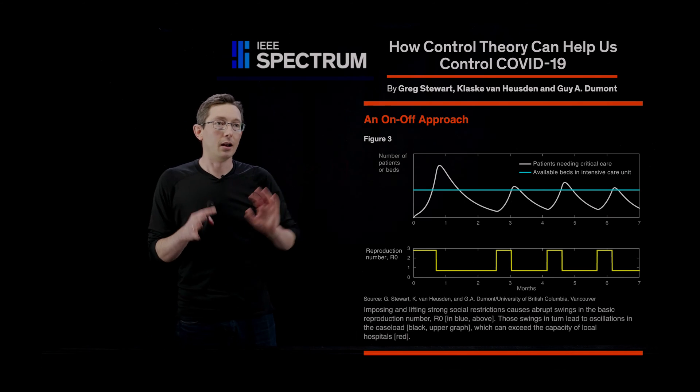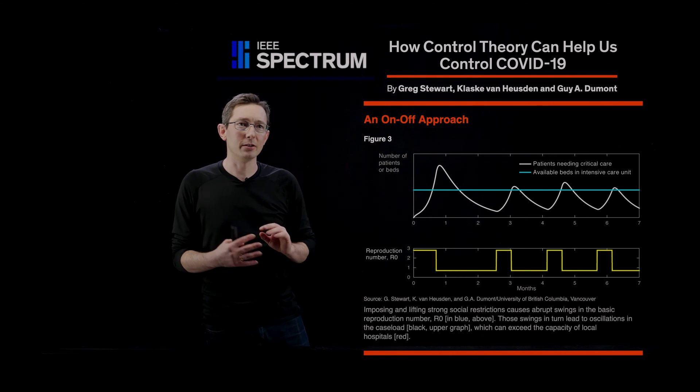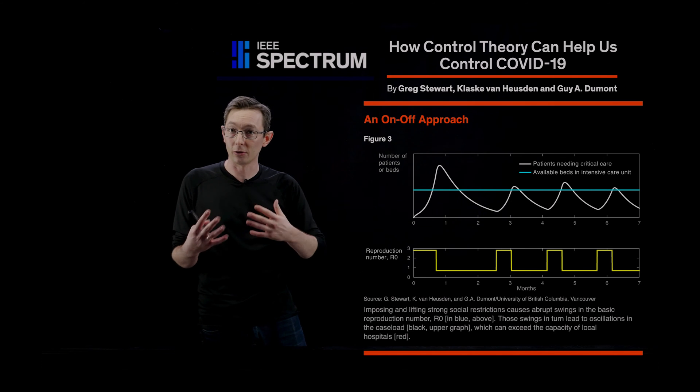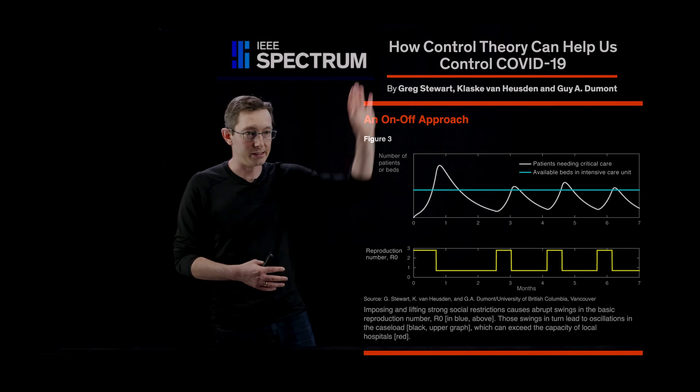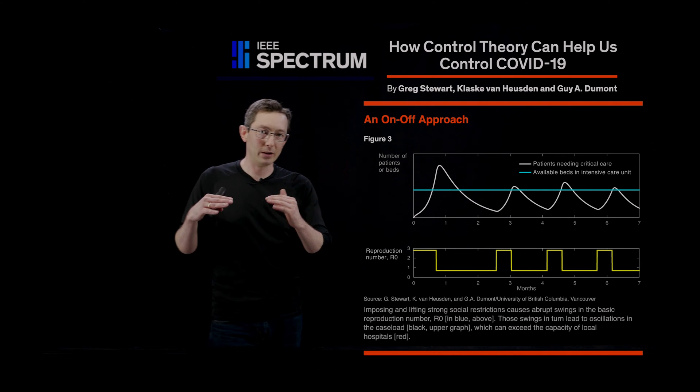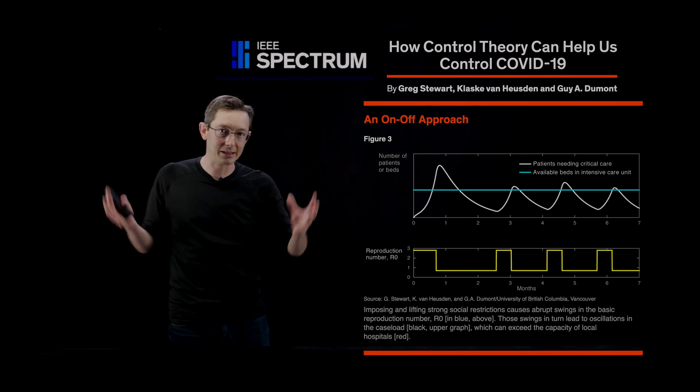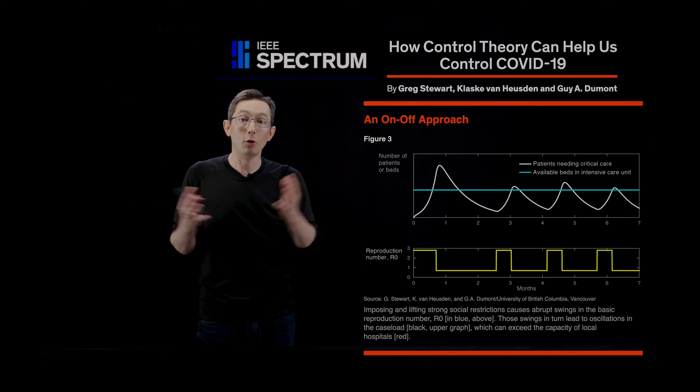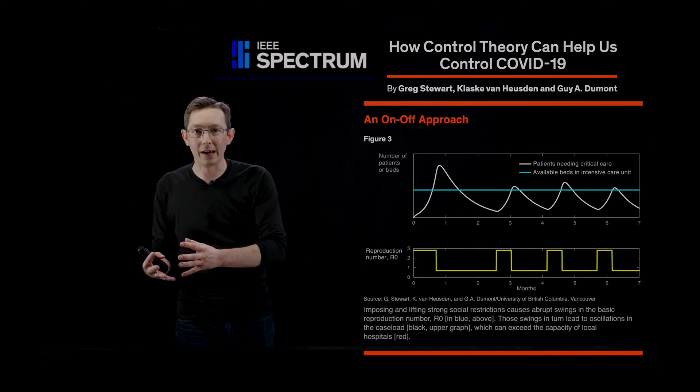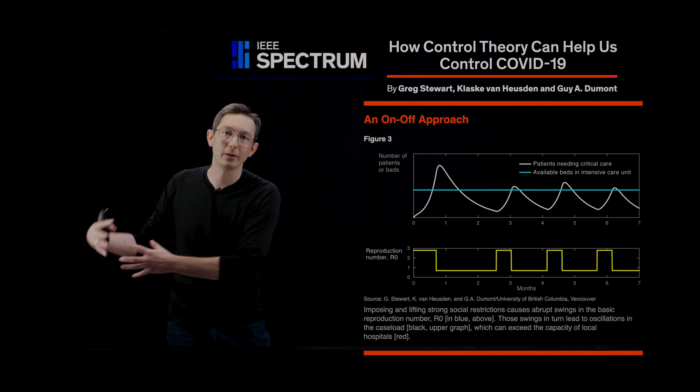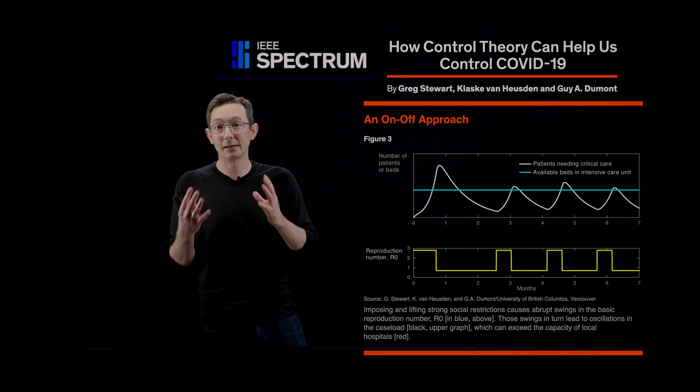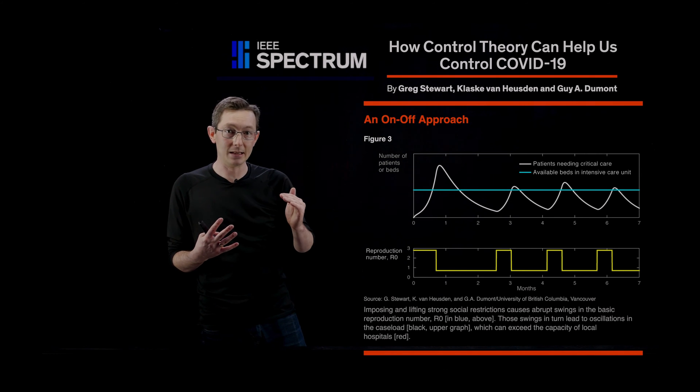There's a great article in the IEEE Spectrum - I encourage you to check this out - where they talk about different control strategies and how control can help us understand and control this spread. One of the concerns people have: we've been suppressing the spread of this disease by global widespread efforts of social distancing, no handshakes, limiting large gatherings, shelter in place laws, things like that. A massive global effort to keep this disease suppressed.